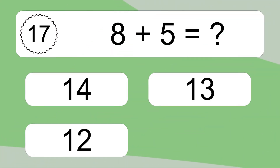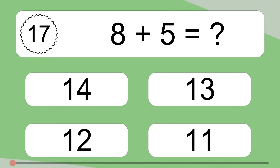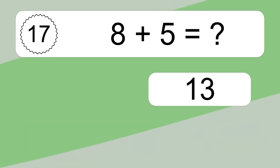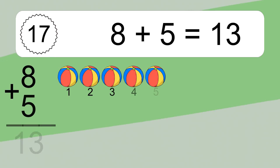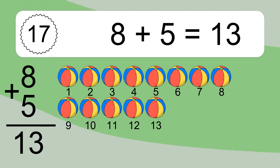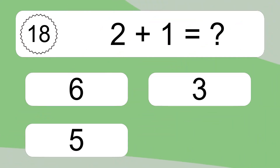8 plus 5 equals what? 8 plus 5 equals 13. Let's count it: 1, 2, 3, 4, 5, 6, 7, 8, 9, 10, 11, 12, 13.